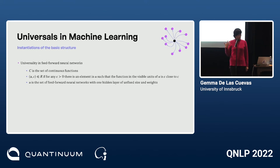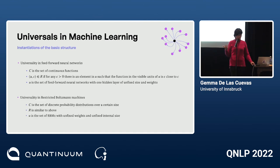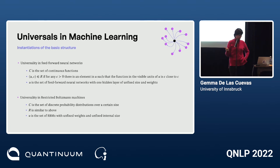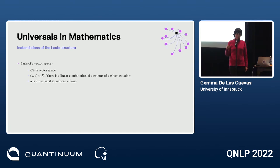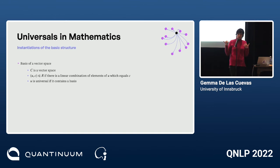In machine learning, the relation for feed-forward neural networks is about approximating a target continuous function; there is a similar structure for restricted Boltzmann machines, where what is to be approximated is a discrete probability distribution. The basis of a vector space also fits: C is a vector space, R expresses linear combination, and U is a generating set containing a basis.